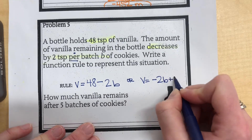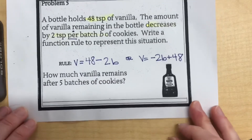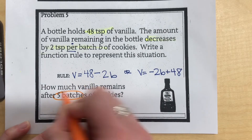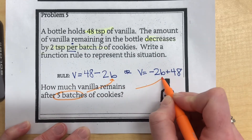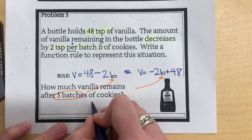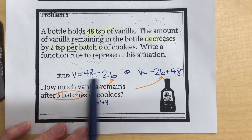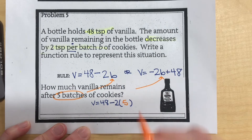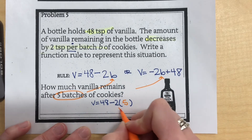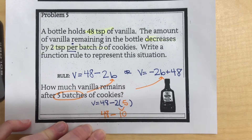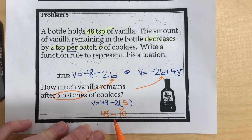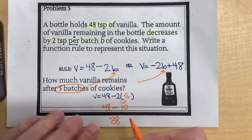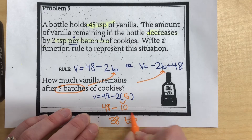We also have to answer: how much vanilla remains after five batches? We plug in 5 for B. Using V equals 48 minus 2 times 5: following order of operations, 2 times 5 is 10, then 48 minus 10 gives an answer of 38. So 38 teaspoons of vanilla remain.